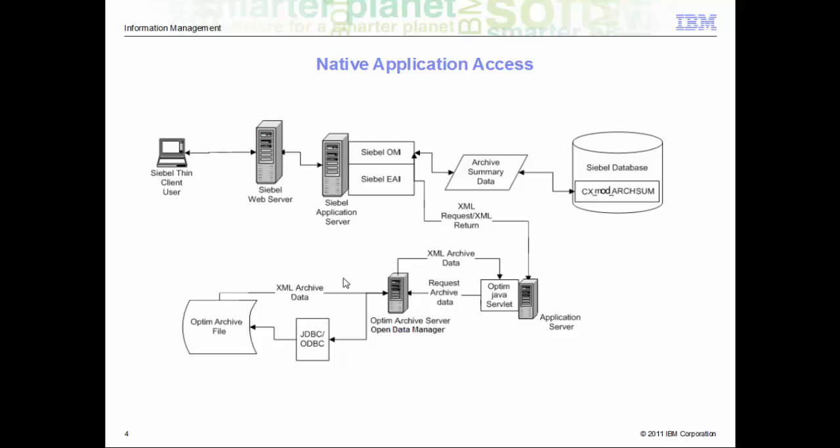The figure represents the native application access architecture. End users can view the archive data within the Siebel application. The archive data is displayed in summary as well as in detailed views. The summary data is stored in the Siebel database, while detailed view data is retrieved from the archive file through ODM and WASCE server.